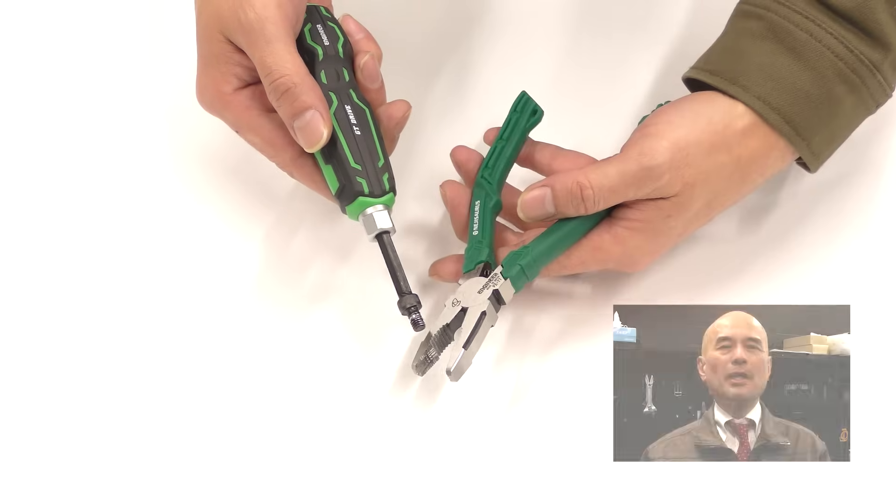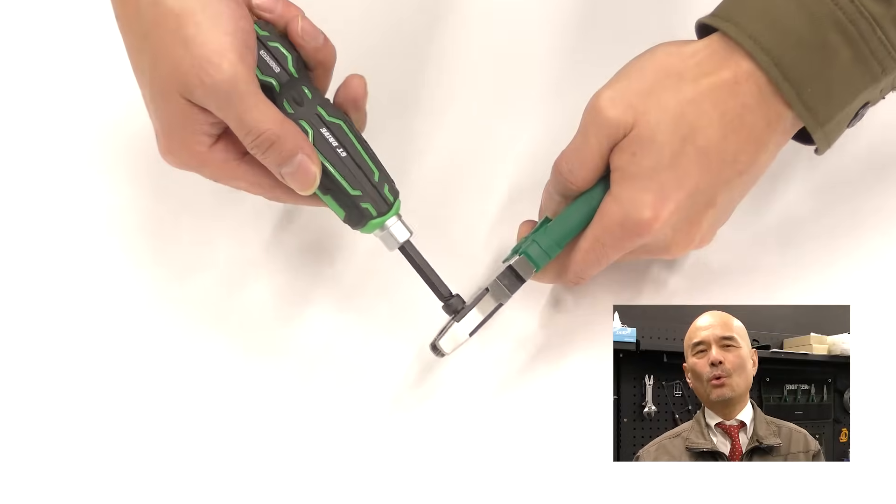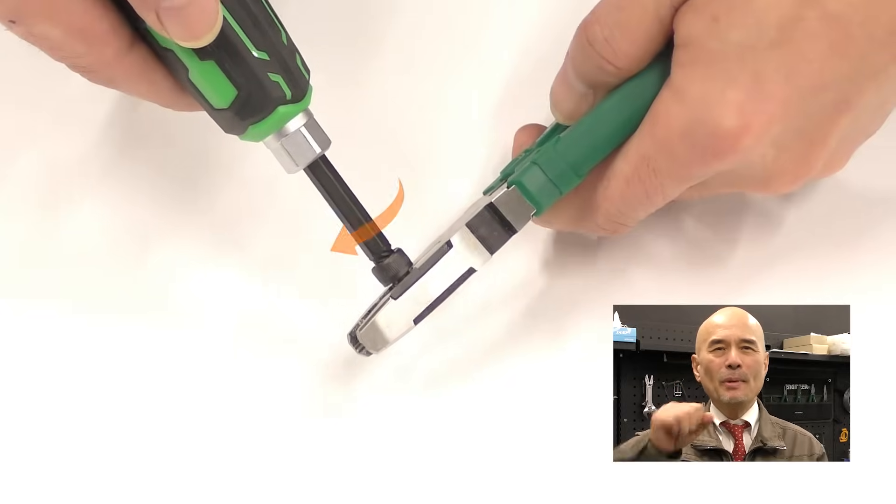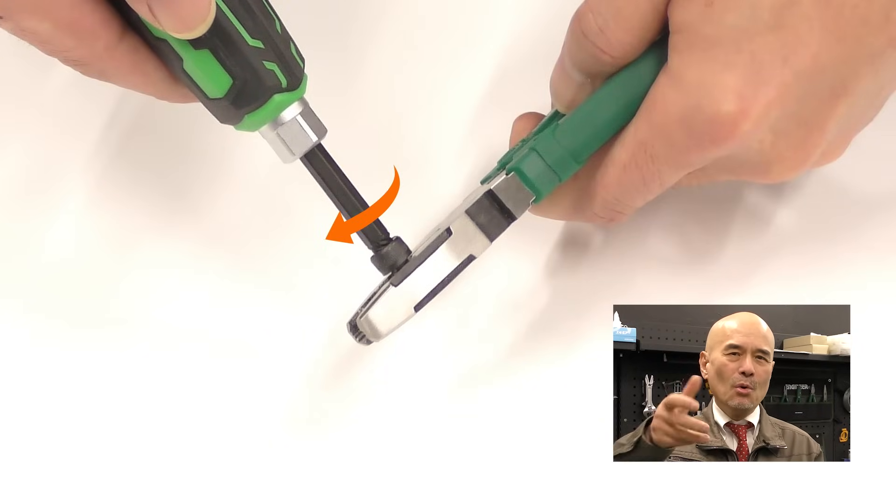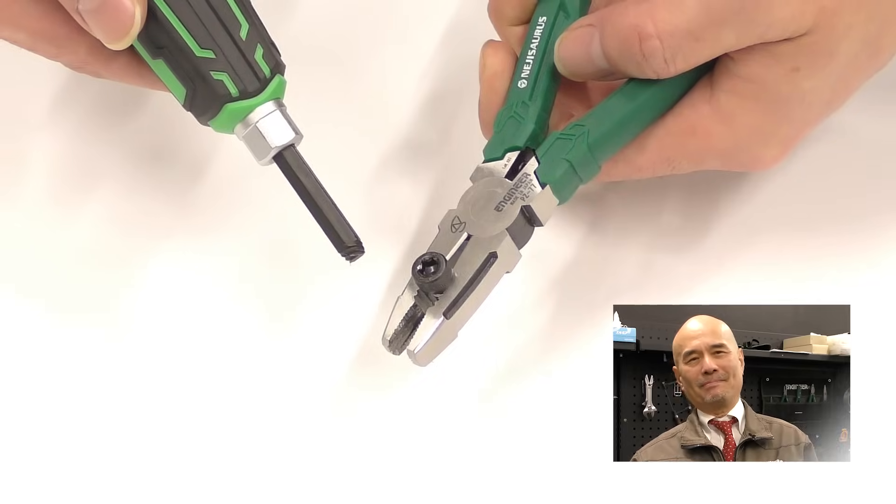Finally, I'd like to tell you the method to remove the extracted screws from Neji Zauls mogla. Turn mogla clockwise and the screw can be removed easily.